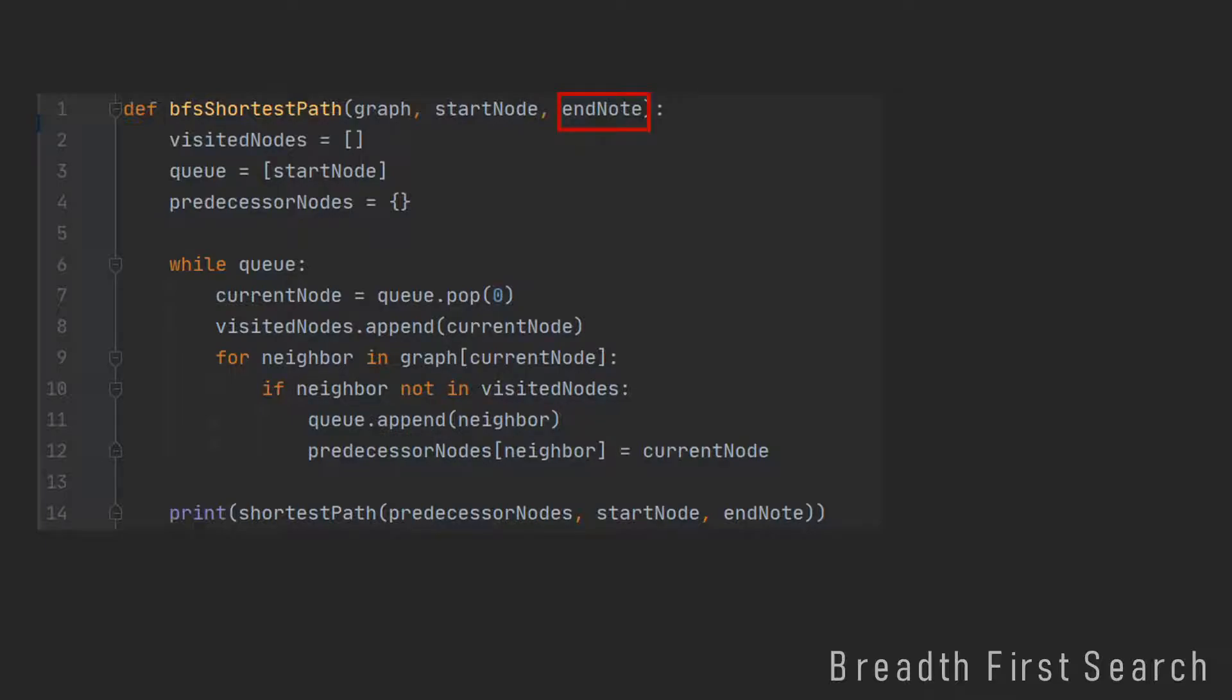We have a third parameter called end node, because we want to return the shortest path from the start node to the end node. And we use another dictionary called predecessor nodes, which just stores the predecessor of every node visited, or instead of predecessor you could also say parent. And this dictionary is always filled when we visit a new neighbor. So every time we visit a new neighbor, we set the predecessor of this neighbor to the current node.